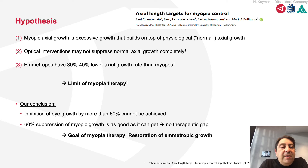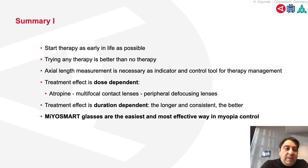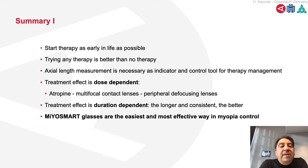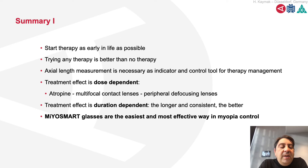The axial emmetropic eye growth should be the goal for myopia therapy, aiming to restore emmetropic growth. As a first summary: start treatment as early in life as possible; trying any therapy is better than no therapy. Axial length measurement is necessary as an indicator and control tool. The treatment effect is dose-dependent for atropine, multifocal contact lenses, and peripheral-defocus lenses. The treatment effect is also duration-dependent — the longer and more consistent, the better. Myoglasses are the easiest and most effective way in myopia control.